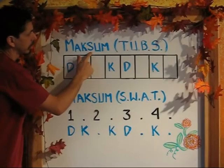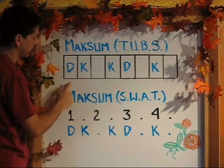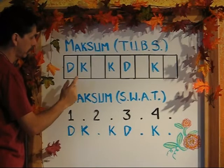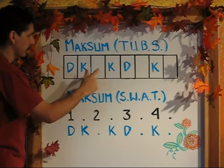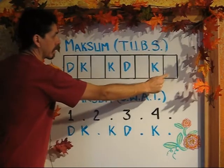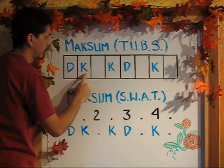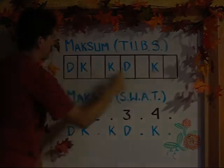We begin with the rhythm maksum and the TUBS system — time unit box system. Starting with an even pulse, we're then going to add our voice as we point. When you've mastered the rhythm at a slow tempo, the next step is to speed up and then transfer the rhythm from the page through your voice to your body and the drum.